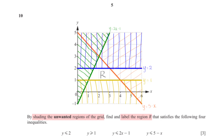Each line splits the graph into two regions. Using the inequalities as a guide, we determine and shade all unwanted regions. For y ≤ 2, using the origin as a test point gives 0 ≤ 2, which is true, so the region below y = 2 is wanted. We shade the region above y = 2.